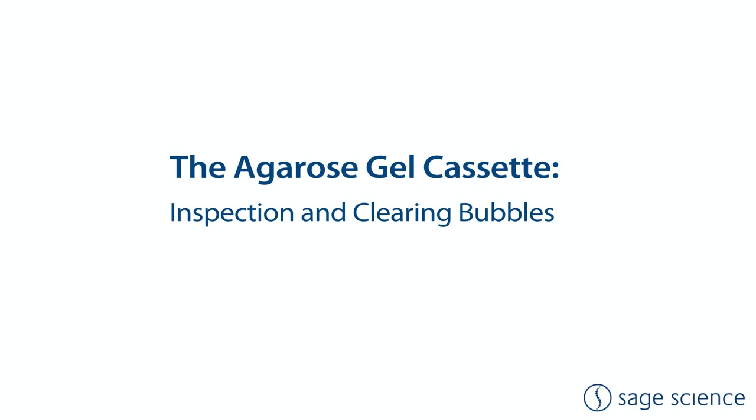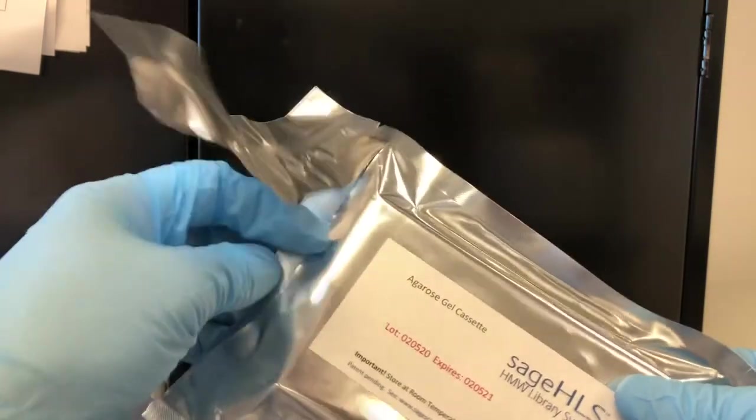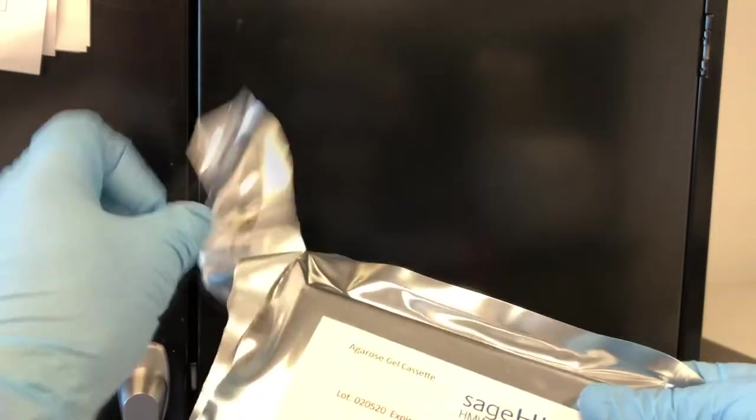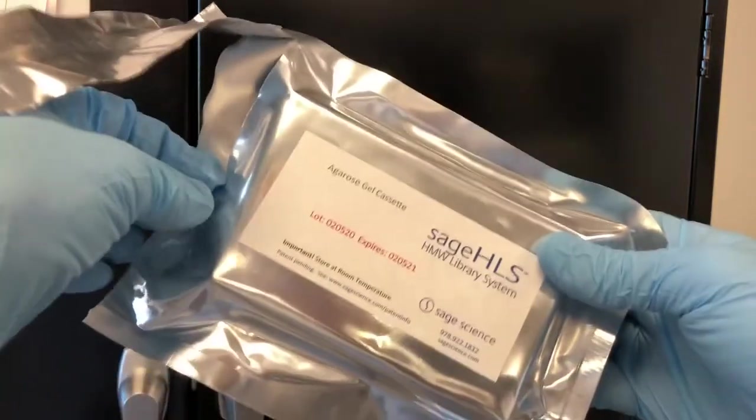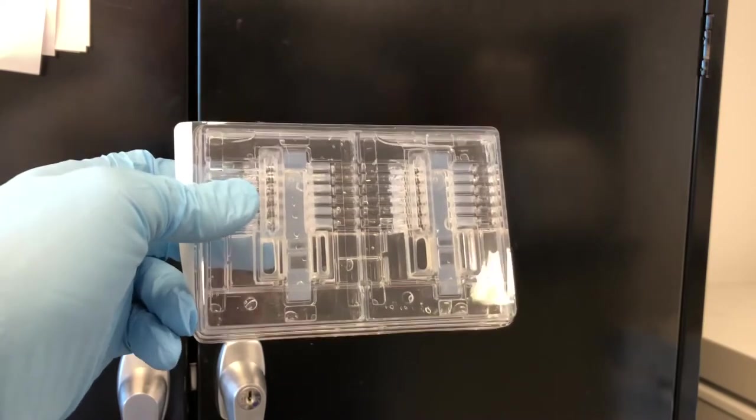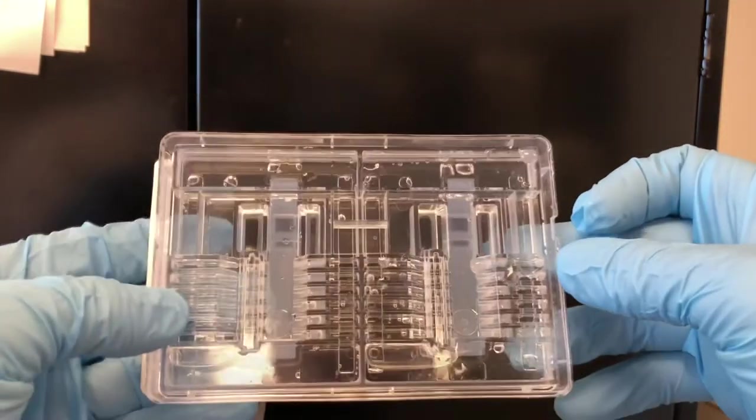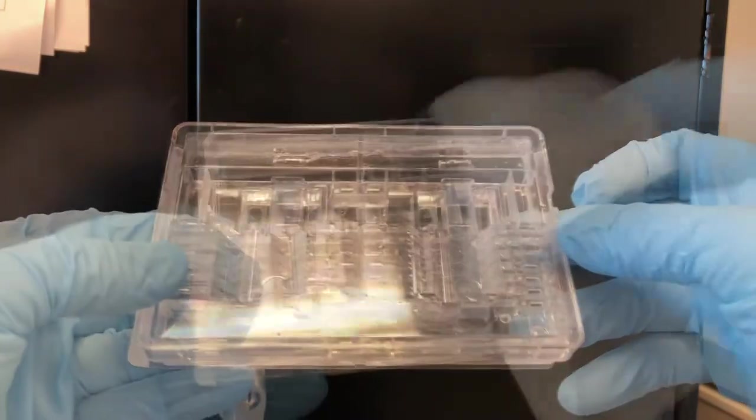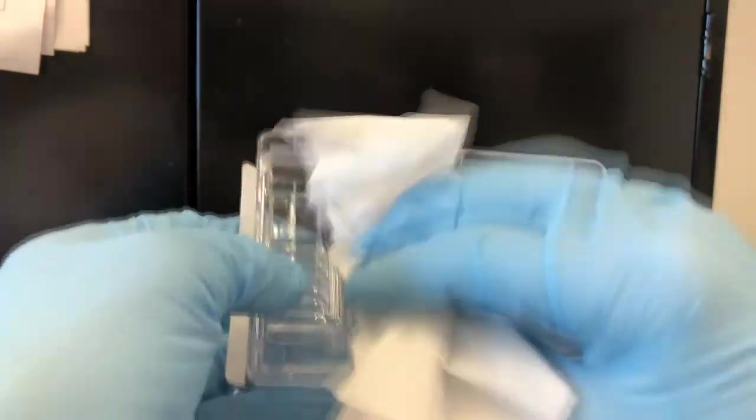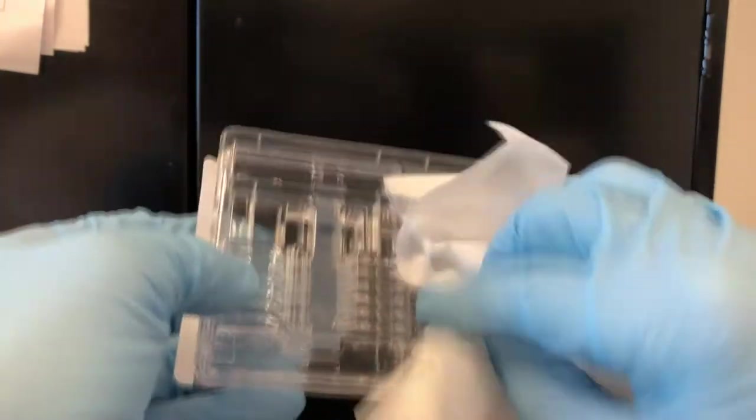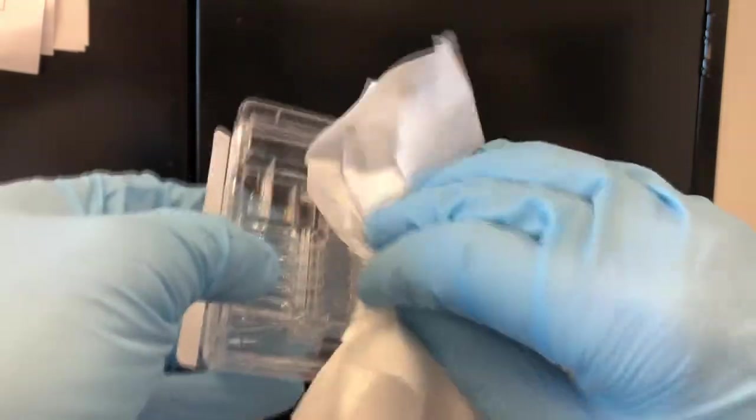Remove the Agarose cassette from the package. Inspect the cassette and packaging for buffer leakage. Small amounts of leakage, one mil or less, are not unusual. In addition to the top adhesive seal, there are small seals on the bottom of the cassette below the gel columns. Inspect these for leaks.